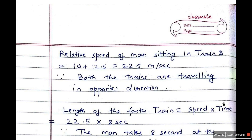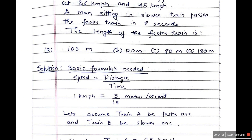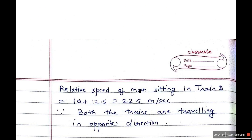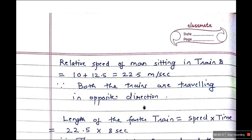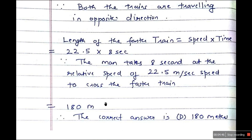Length of the faster train equals distance, which equals speed × time. The train passing the man covers a distance equal to the full length of the train. We know the relative speed is 22.5 meters per second and the time taken is 8 seconds. So we multiply 22.5 × 8 seconds and get the answer: 180 meters. The correct answer is option D, 180 meters.